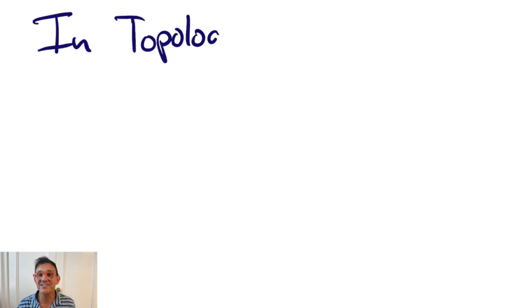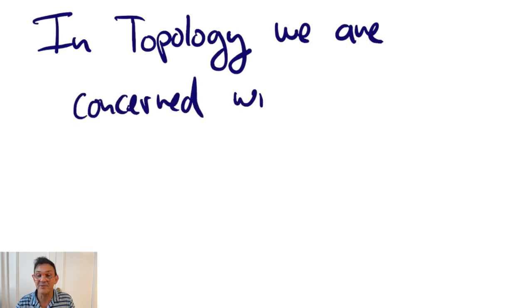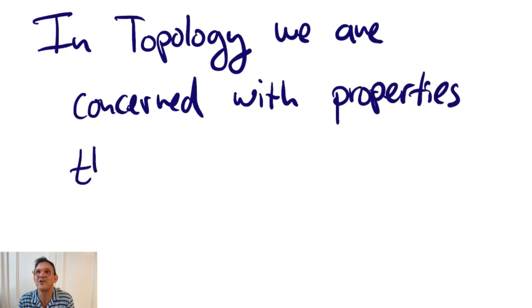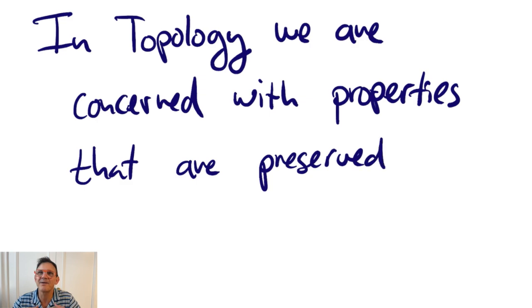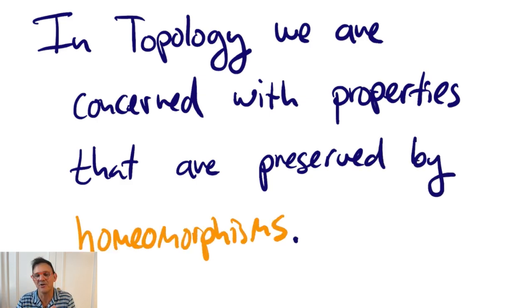In topology, we're concerned with properties that are preserved under homeomorphisms. After all, we consider two objects, two spaces the same if there's a homeomorphism between them. So, the only properties that topology can see are those preserved by homeomorphism.